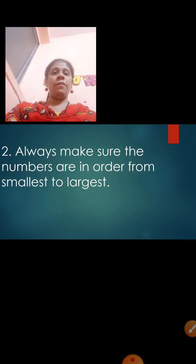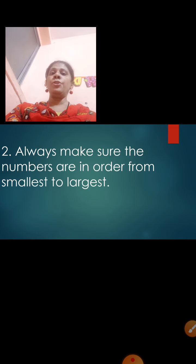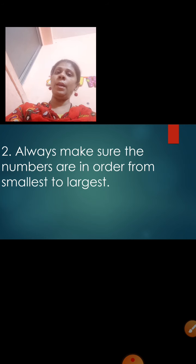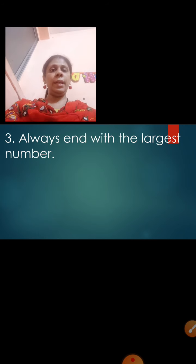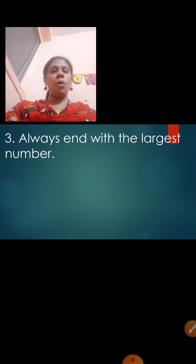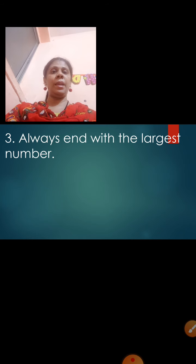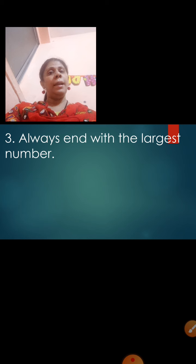Rule number 2: Always make sure the numbers are in order from smallest to largest. You have to make sure the numbers you have written in ascending order go from small to big. Rule number 3: Always end with the largest number. You are going to end with the largest number. So always begin with the smallest number and always end with the largest number.